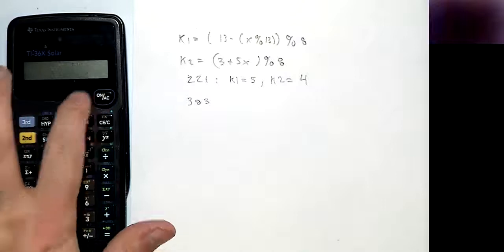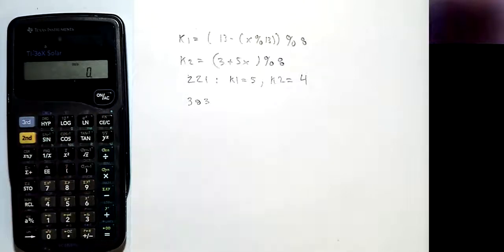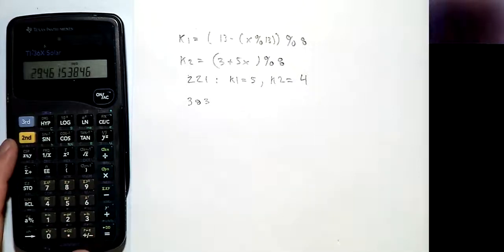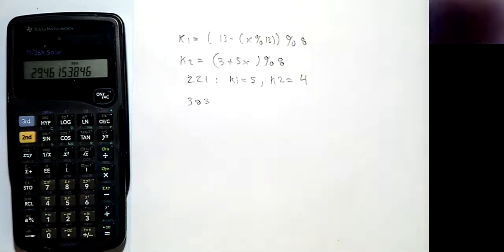Now we do the same thing for 383. So 383 divided by 13 is going to give us 29.46. We get this big remainder.